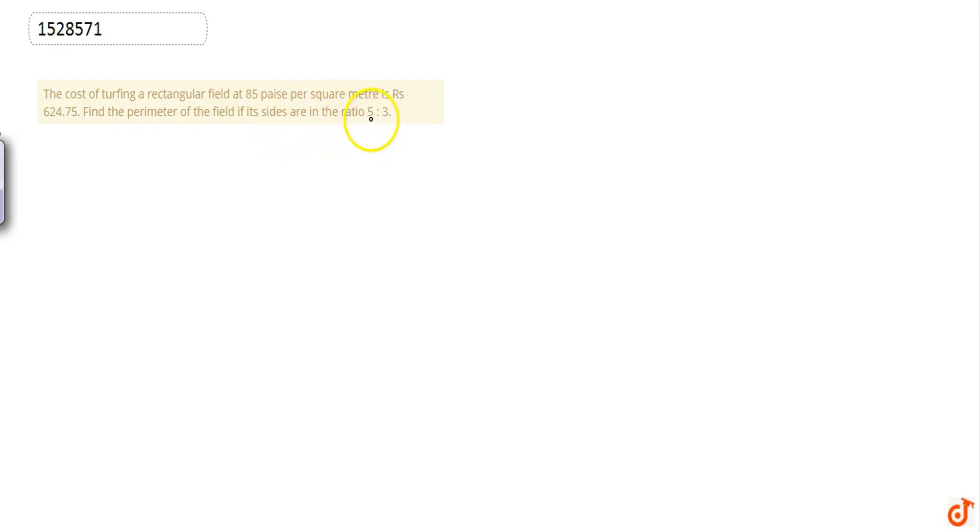The size is given in ratio terms, and we have to find the perimeter. First of all, if we use the size in x terms, we will find out the area.